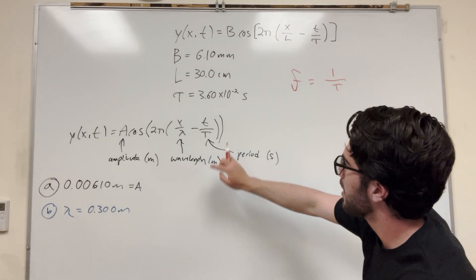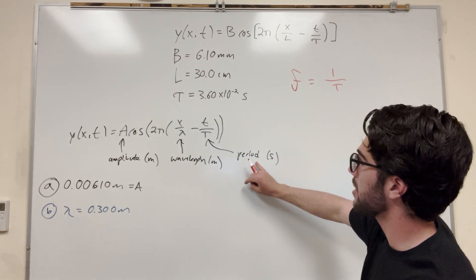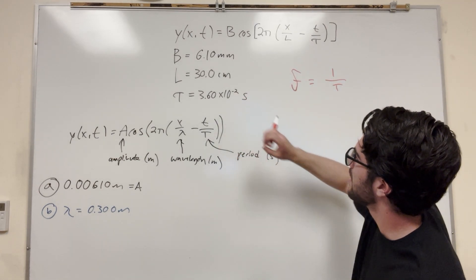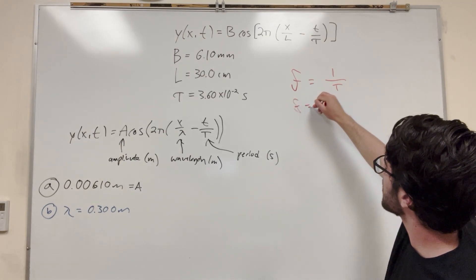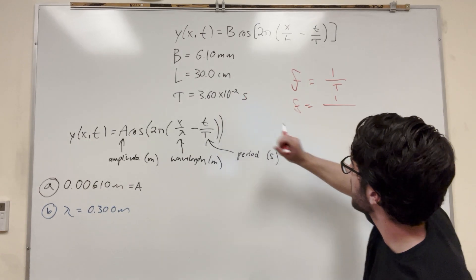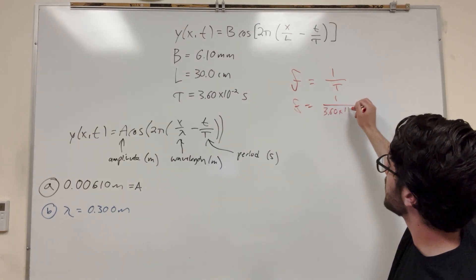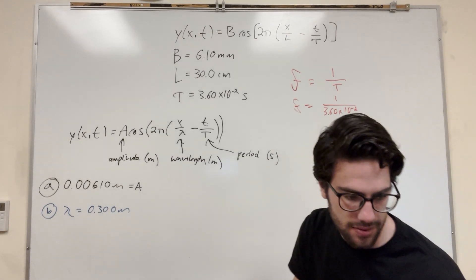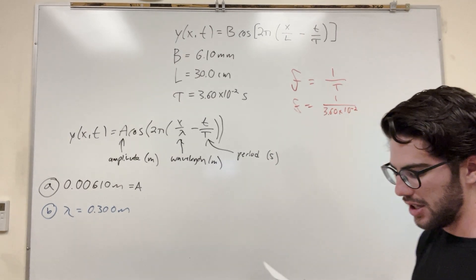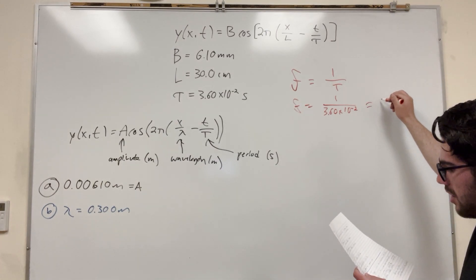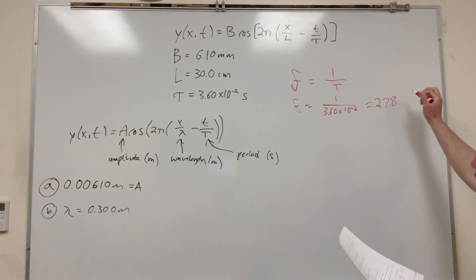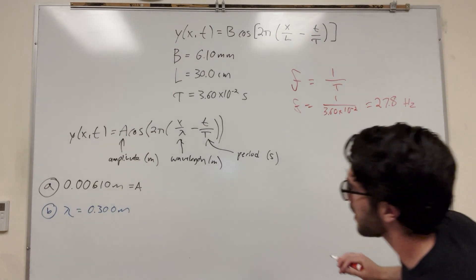So then we can say, yeah, because this T is here, this is our period that corresponds to our tau up here. And it gives us our tau is that. So if you want frequency, you're just going to take one over whatever our period would be, which is this number. So 3.60 times 10 to the negative 2. And this number is equal to